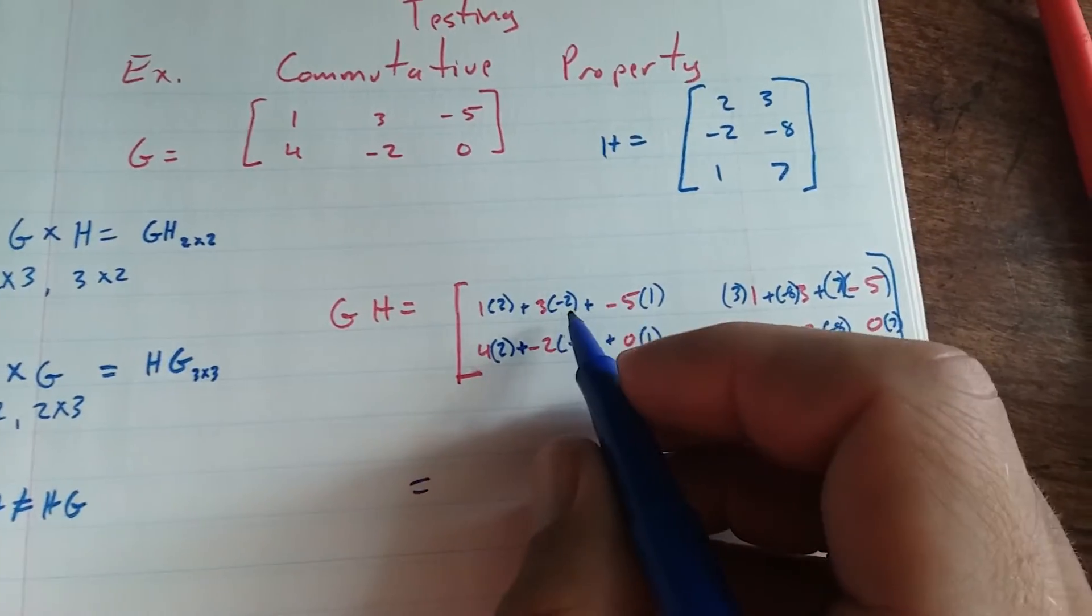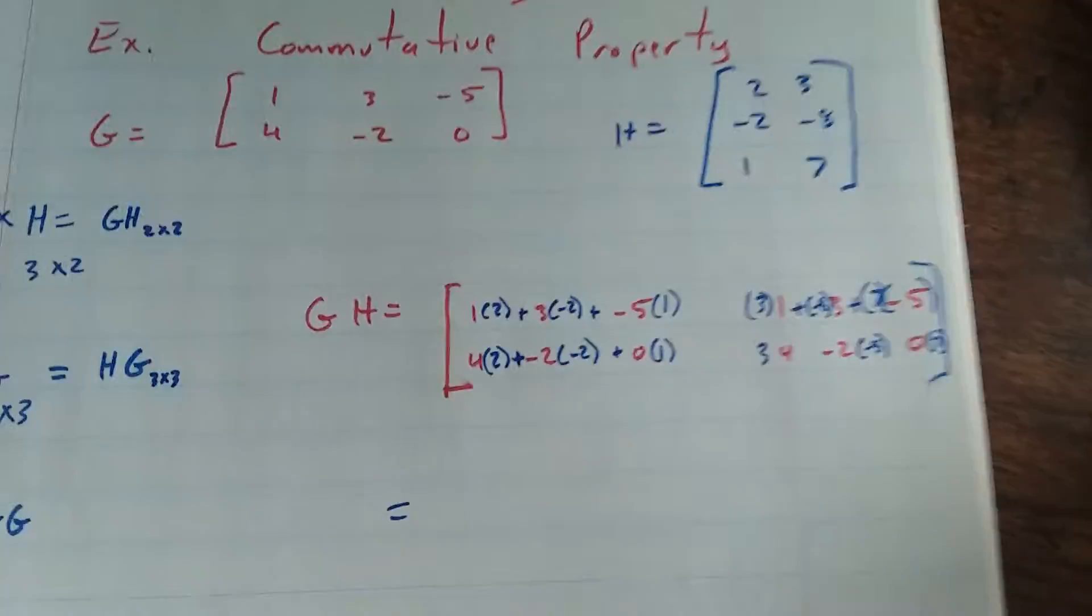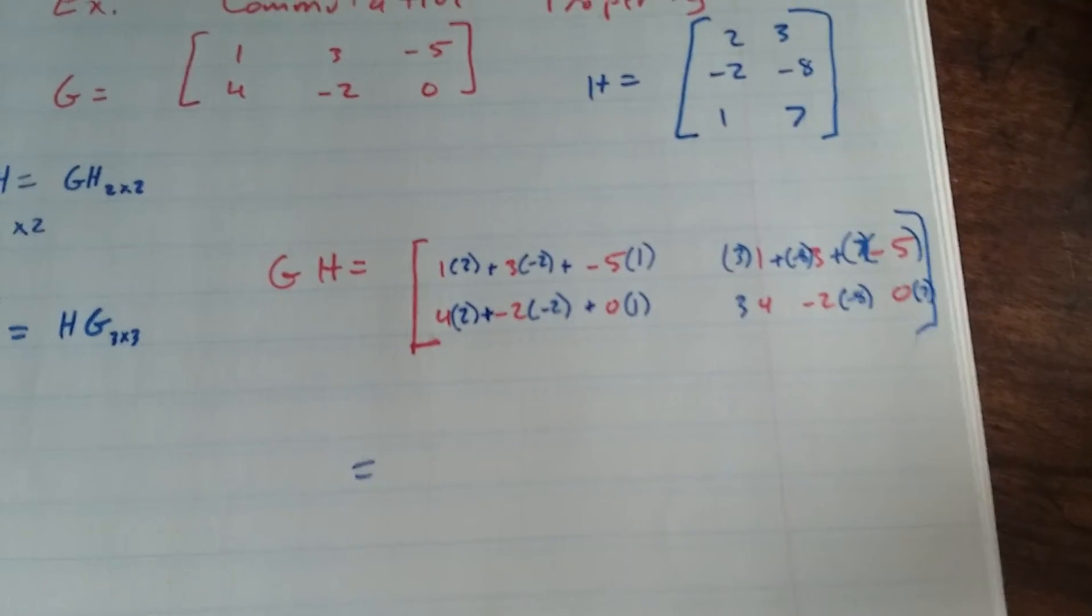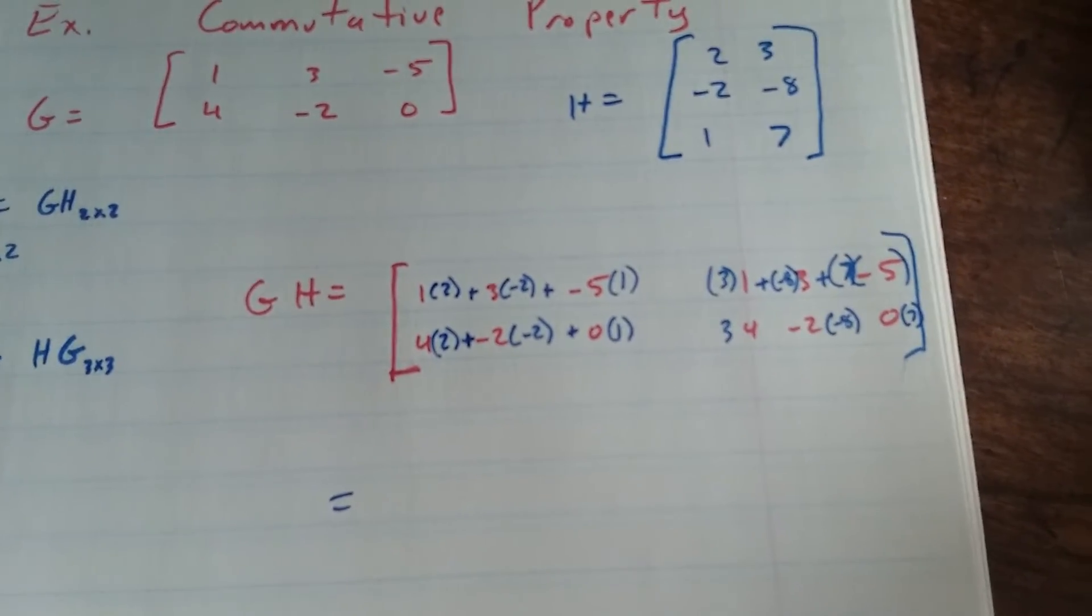So I have 2 plus negative 6 minus 5. It's going to be negative 4, negative 9.